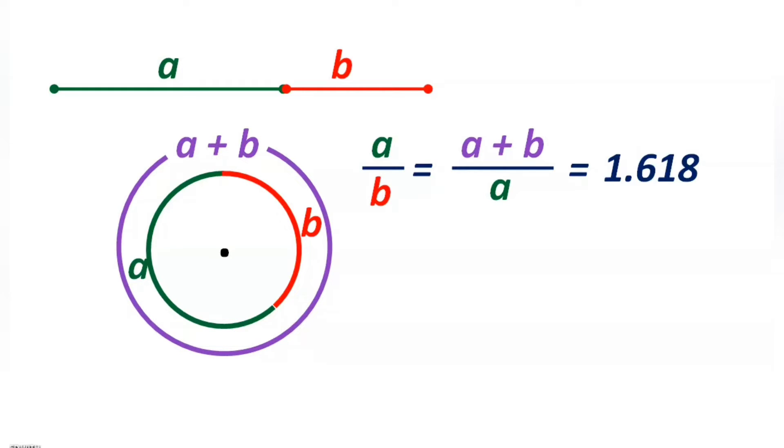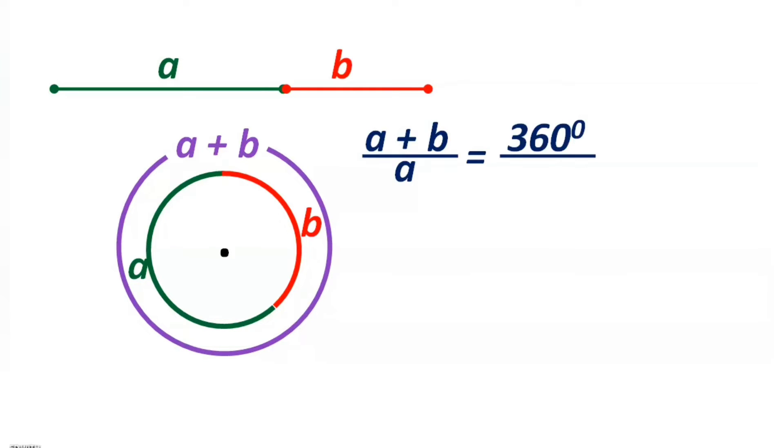Now let us see how it will happen. Consider a plus b by a. What is a plus b? A plus b makes a full circle, which is equal to 360 degrees. What is a? A is the arc which subtends an angle at the center equal to 222.5 degrees. If you divide these two things, we will get 1.618, which is the golden ratio.